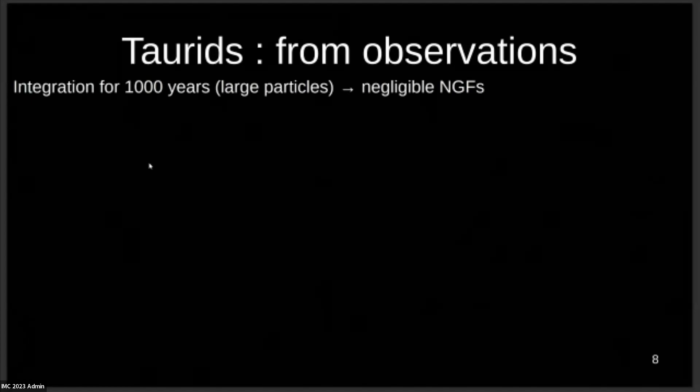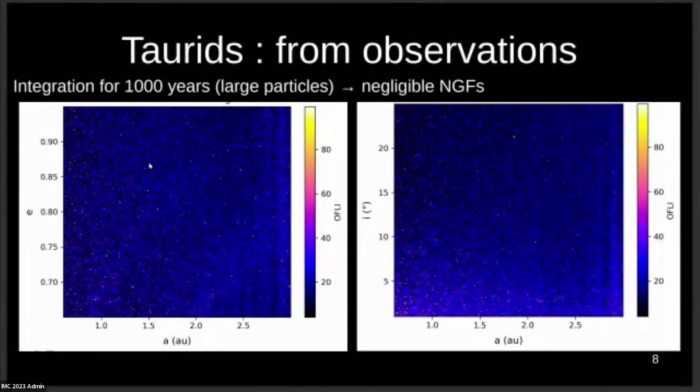It was the same idea. I took particles from initial conditions from the database. I integrated those particles for 1,000 years. And just to make it simple, I took large particles so we could neglect the NGF for now. This is the maps I've obtained. As you can see, there's not much to see compared to the previous ones.